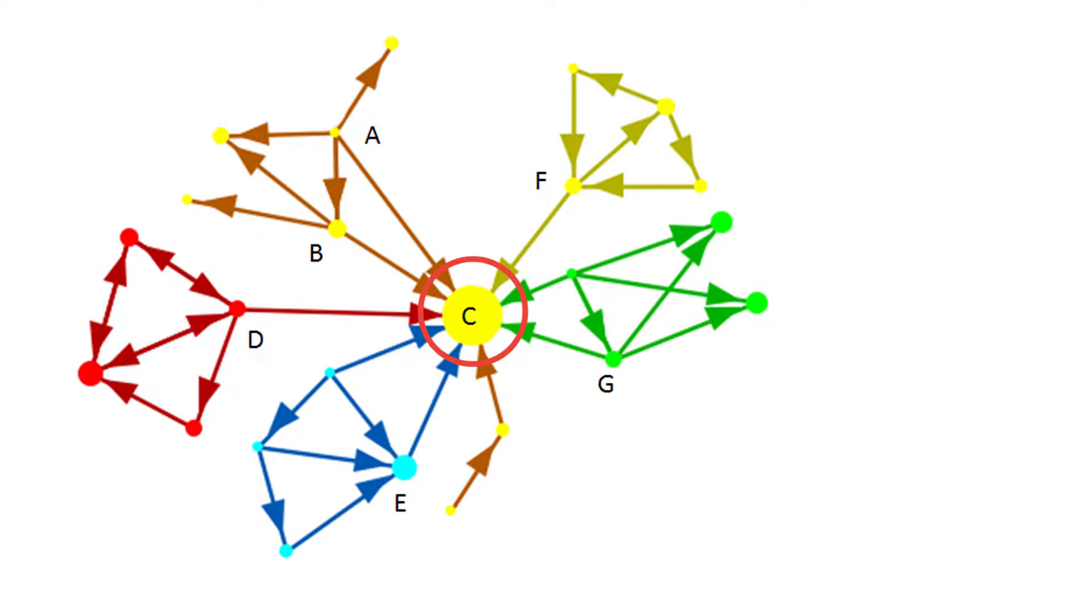But if C were to leave, there would be nothing connecting the cliques, right? Because of the central role that C plays, we can call this system centralized.